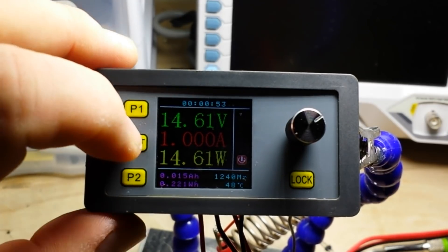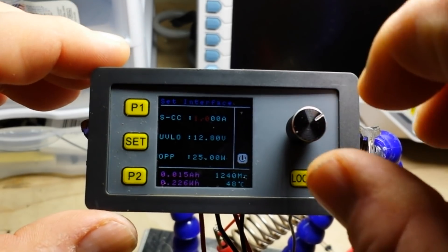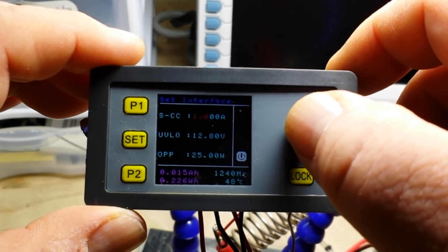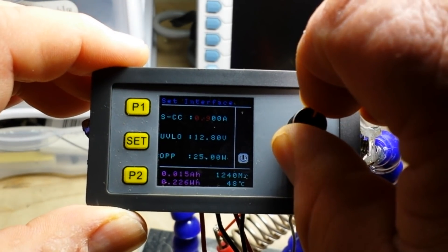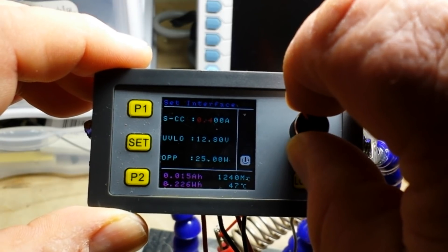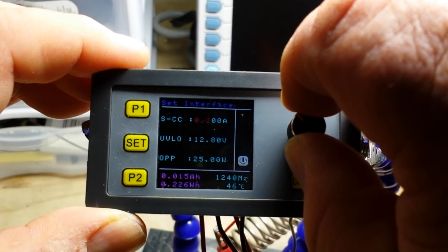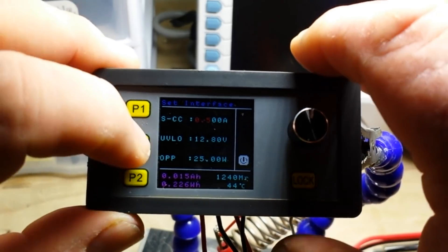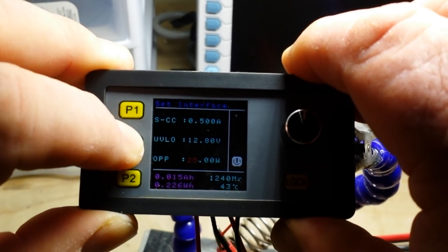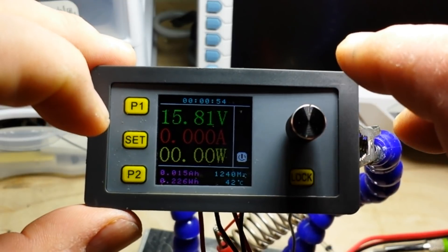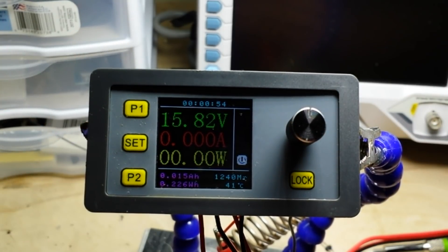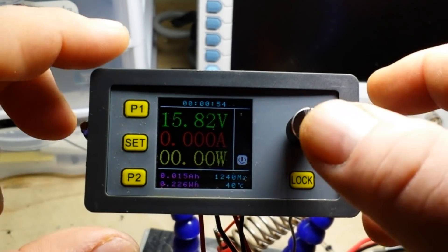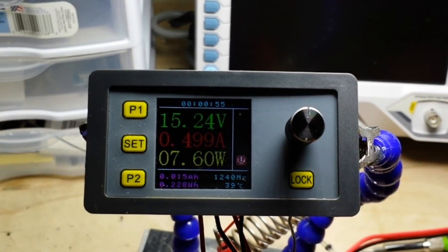Now let's see, can we change the settings while we're in it? Yes, so now we're down to 0.2, 0.3, 0.4. There's a half an amp. It looks like it stopped, so if you change the settings it's going to stop it. There we go, half an amp, 7.6 watts.